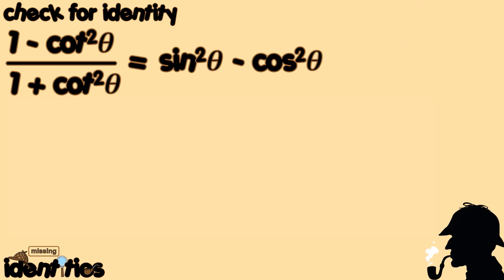Case number 27. Let's verify whether 1 minus cotangent squared theta, all over 1 plus cotangent squared theta, is equal to the identity sine squared theta minus cosine squared theta.